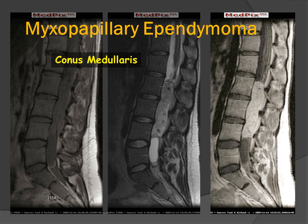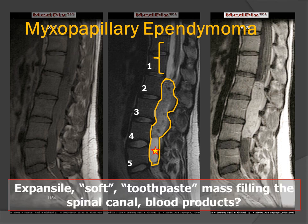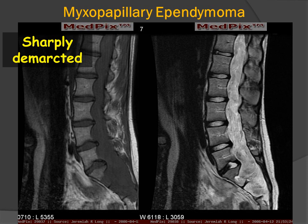Here is another example of a lumbosacral myxopapillary ependymoma arising from the tip of the conus medullaris and extending down behind lumbar vertebral bodies L2 through L4, with a fluid component or cyst behind the vertebral body of L5. There is expansile remodeling of the lumbosacral spinal canal. The tumors are oftentimes described as soft, plastic, or caulk-like lesions, and because they grow slowly, the spine is able to remodel around them.